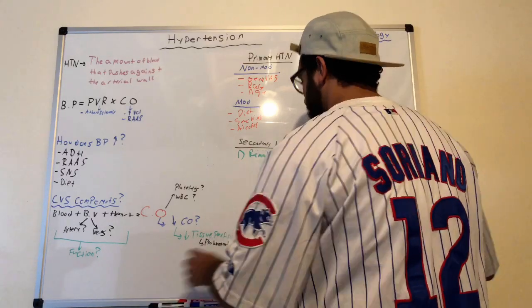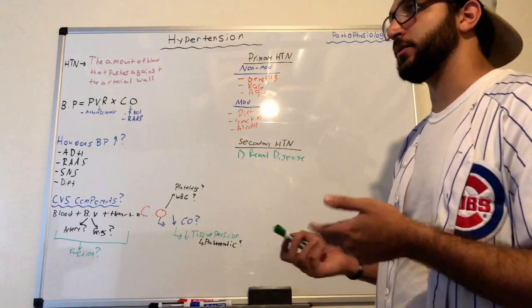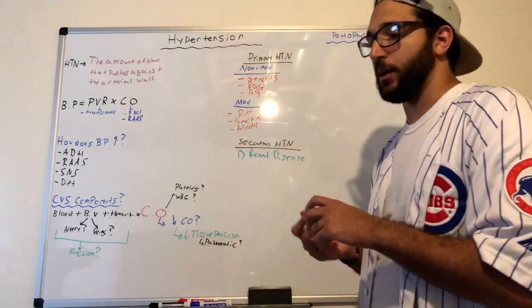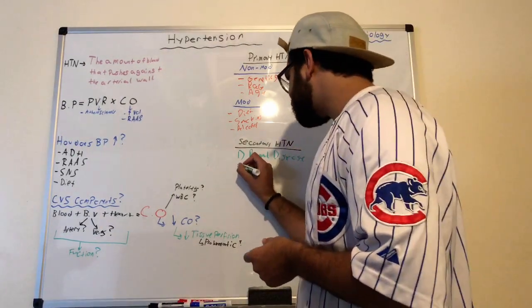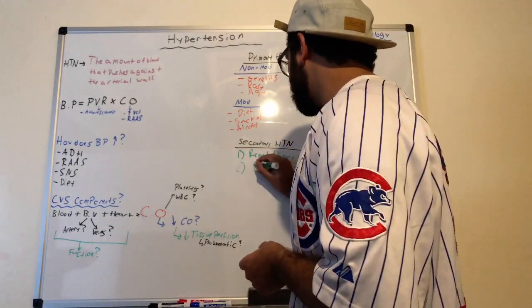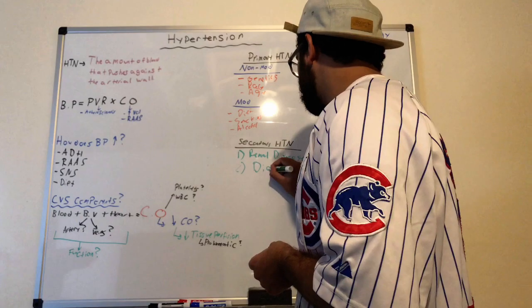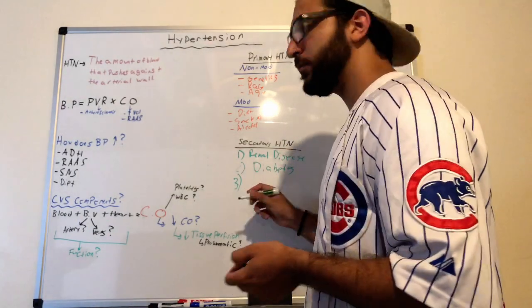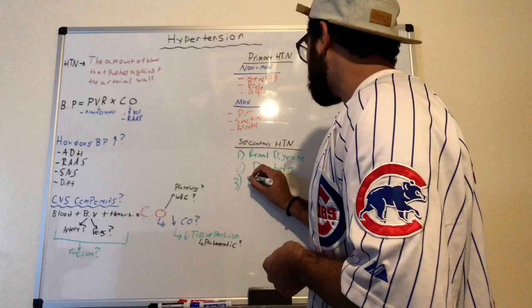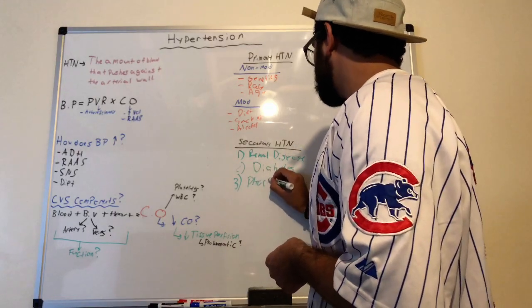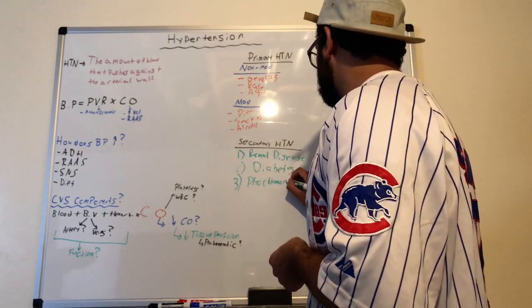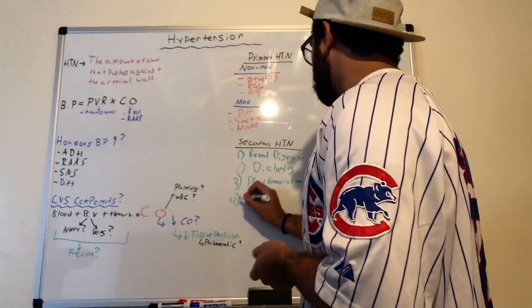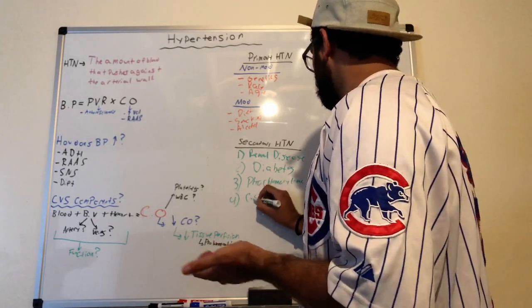Endocrine disorders are another cause of secondary hypertension. Examples include diabetes, pheochromocytoma, and Cushing's syndrome.